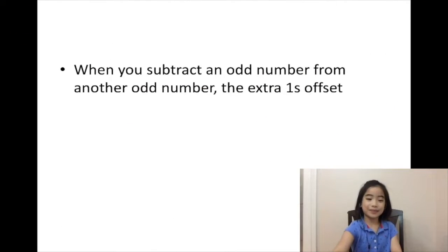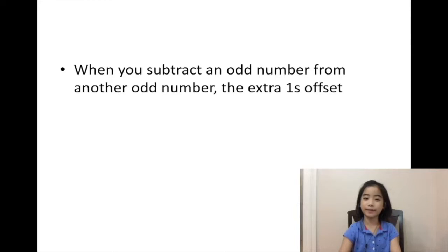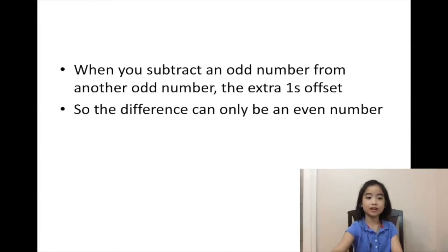So now let's make it clear. When you subtract an odd number from another odd number, the extra ones offset. So the difference can only be an even number.